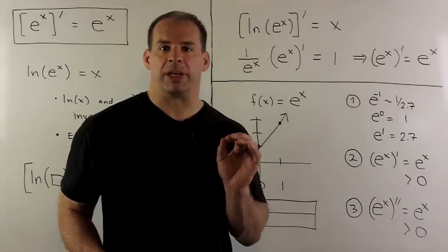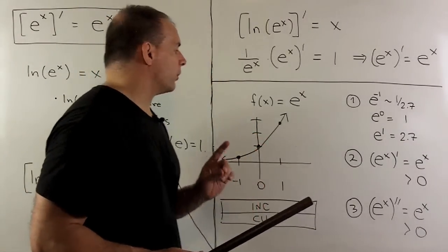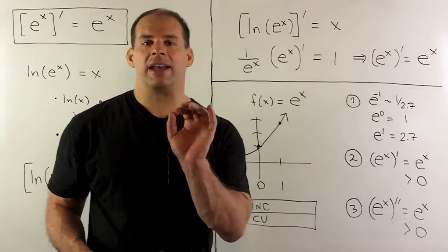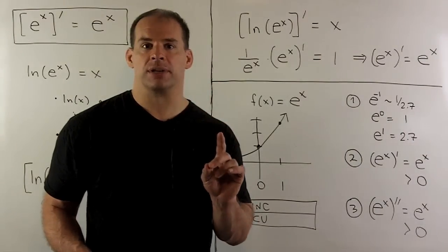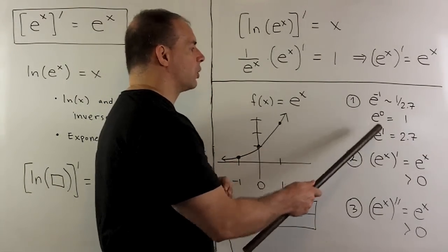Okay, first application. Let's take a look at the graph of e to the x. So, if I want to graph e to the x, your guide is going to be to graph three points. I'm going to graph e to the x at minus 1, 0, and 1.